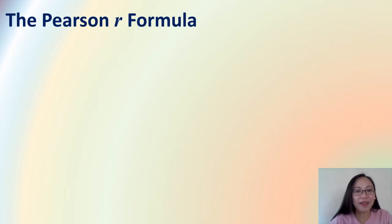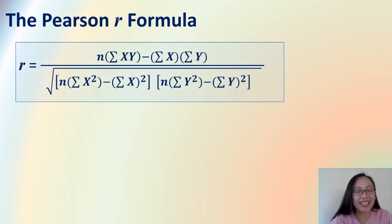The Pearson R formula is given by this. Now, before we read this, we will try to identify all the symbols. First, we have N here, the number of pairs of cases. And then this symbol, which is the summation symbol.